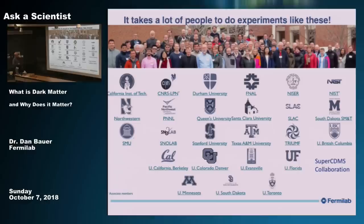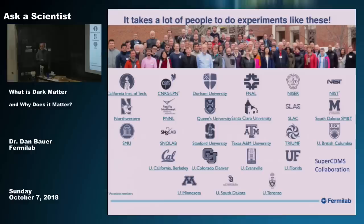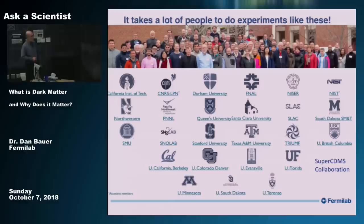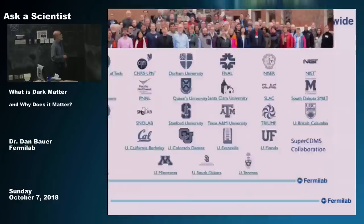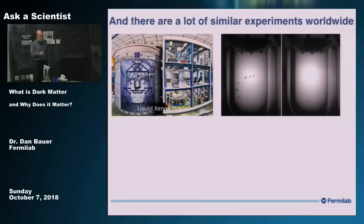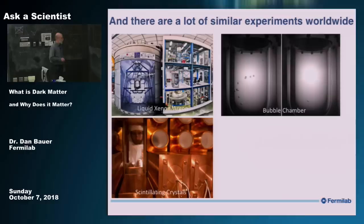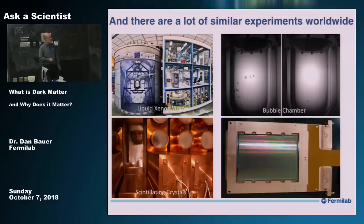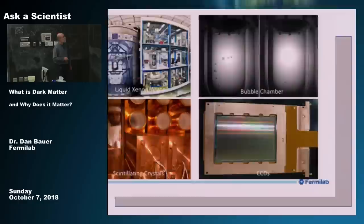It takes a lot of people to do these experiments — roughly 100 people in SuperCDMS, and all the collaborations have between 30 and 150 people doing this sort of work, spread all over the world. There are a lot of similar experiments worldwide using different technologies: some groups use liquid xenon or liquid argon, others use bubble chambers — an old technology pioneered here but resurrected for dark matter searches — scintillating crystals, or CCDs like in cameras. We're trying every possible technology we can to find this.